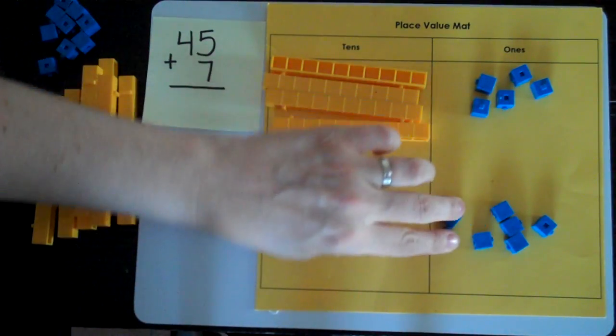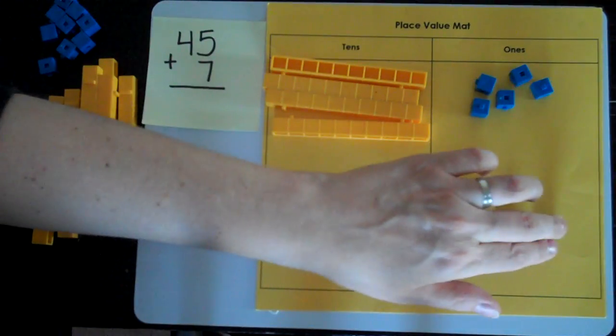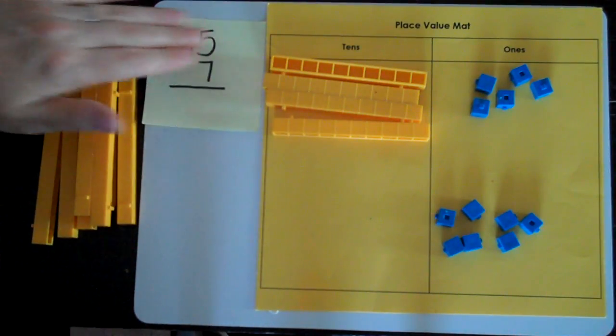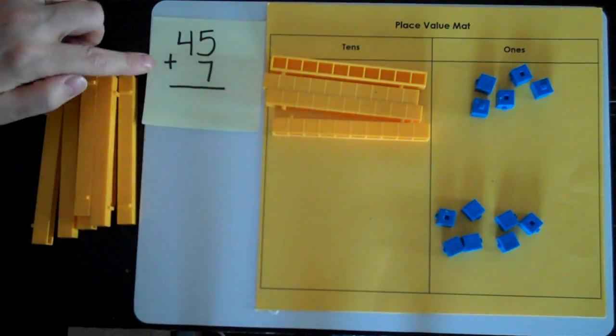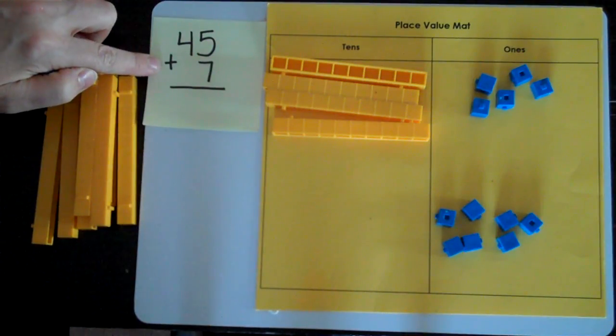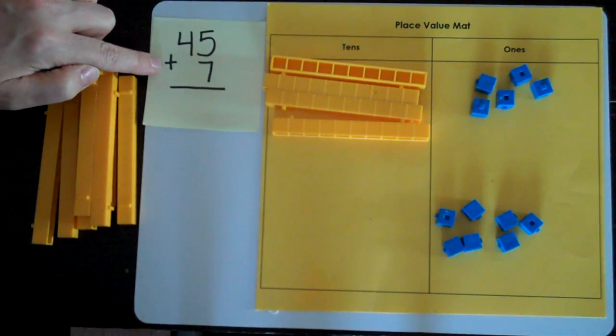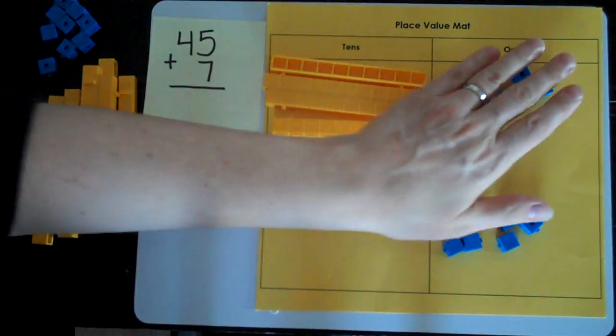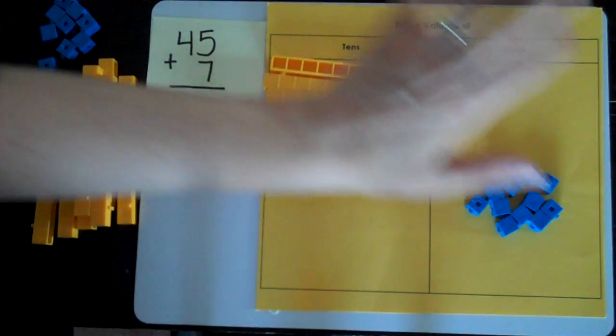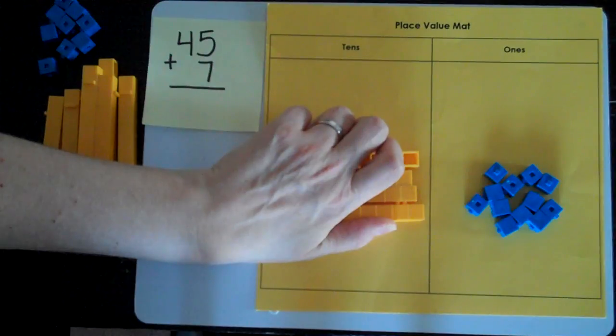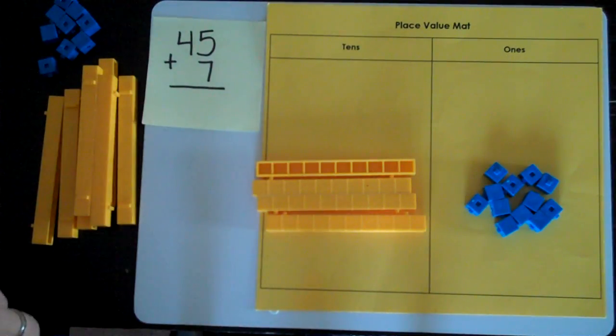And I'm going to just double-check. Two, four, six, seven. So I have 45 and I have 7. I'm going to check my sign. It's a plus sign which means we bring everything all together. I'm going to start with my ones place, bring it all together.